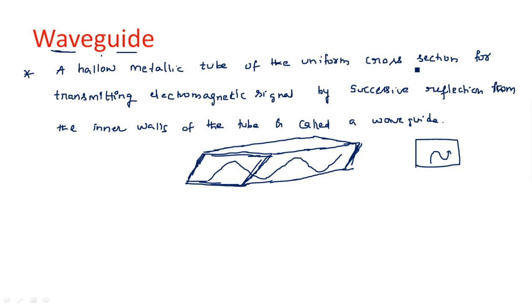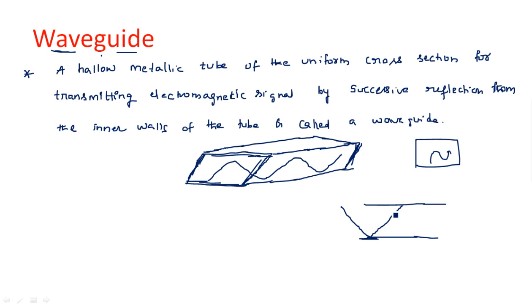A hollow metallic tube of uniform cross-section — wherever you see it, it has uniform cross-section. The purpose of the waveguide is to transmit electromagnetic signals. If you see from the side, when the signal touches the bottom surface, as it is coated with a pure conductor it is reflected back. The top part is also coated with pure conductor so it reflects back again. Total internal reflection takes place because all four walls are coated with pure conductors like aluminum, copper, or gold.